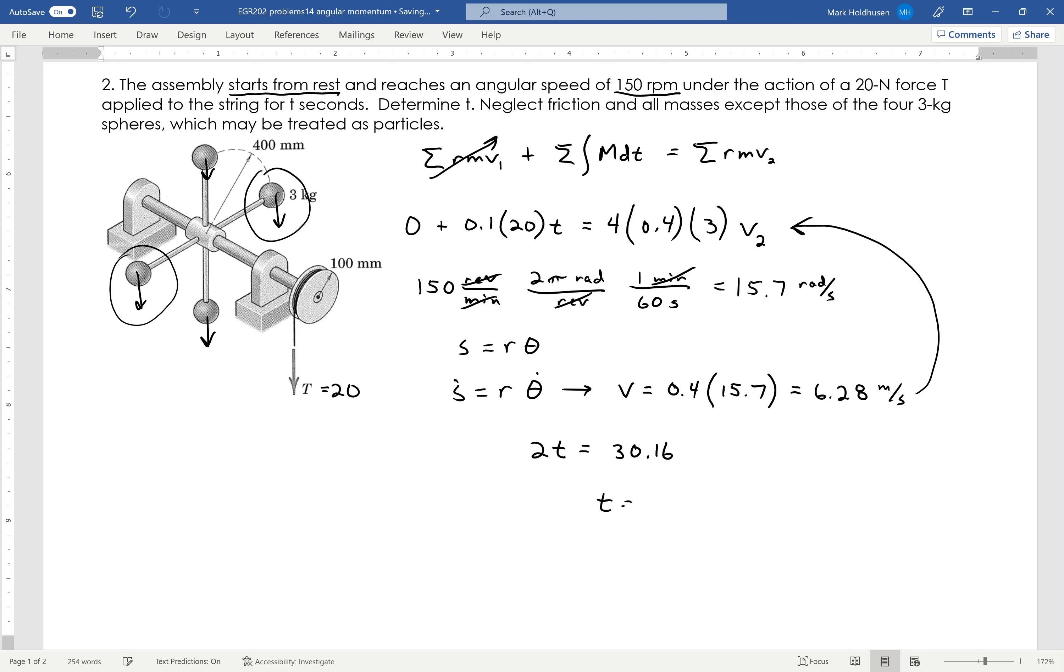So from that, I can find that the time it takes to get up to 150 RPMs, which relates to 6.28 meters per second, that time takes 15 seconds with pulling on that cord with 20 Newtons.